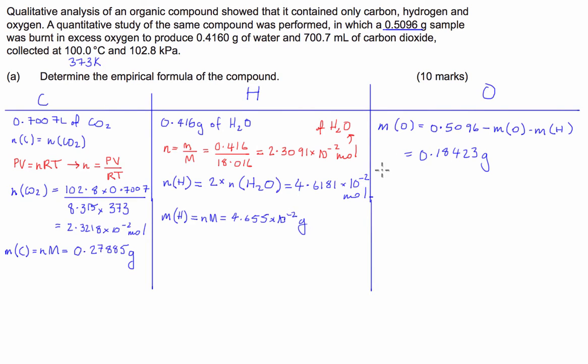From there we can work out the number of moles of oxygen. The number of moles of oxygen is going to be equal to the mass divided by the molar mass, which is equal to 0.18423 divided by the molar mass which is 16, and that equals 1.1514 times 10 to the negative 2 moles.